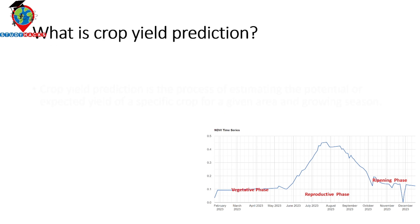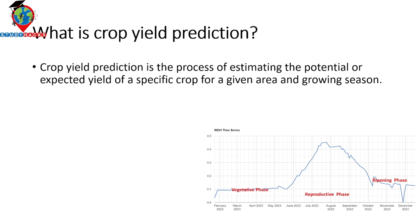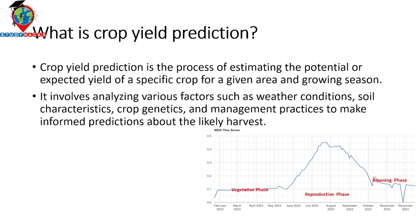Crop yield prediction is the process of estimating the potential or expected yield of a specific crop for a given area and growing season. First, we need to find the growing season from our NDVI map or crop plan. It involves analyzing various factors such as weather conditions, soil characteristics, crop genetics, and management practices to make informed predictions about the likely harvest. In this tutorial, I just focus on NDVI to find out the condition of the crop yield.